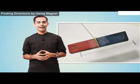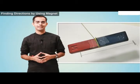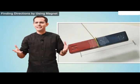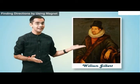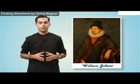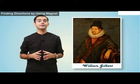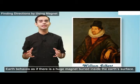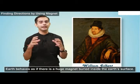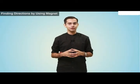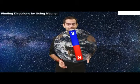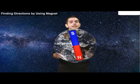We know that a freely suspended magnet always points in the north-south direction when at rest. But why does it depict only the north and south direction? A very famous scientist named William Gilbert suggested some experimental observations to help us. Through his experiments he found that the earth itself behaves like a huge magnet — as if there is a huge magnet buried inside the earth. We can visualize this as a magnet placed inside the earth, due to which the earth behaves as a huge magnet.